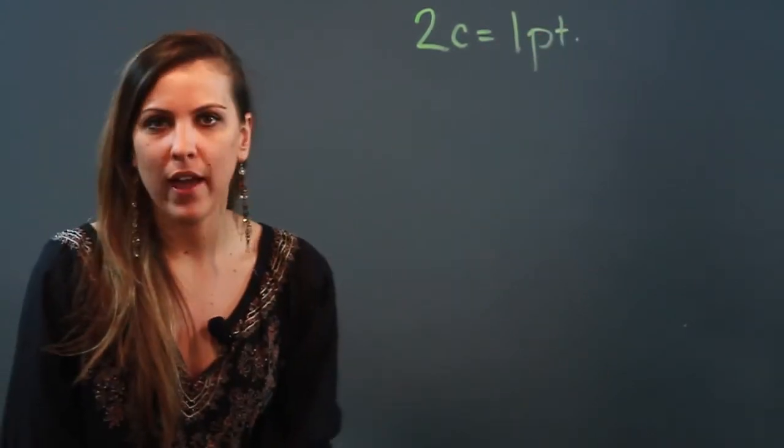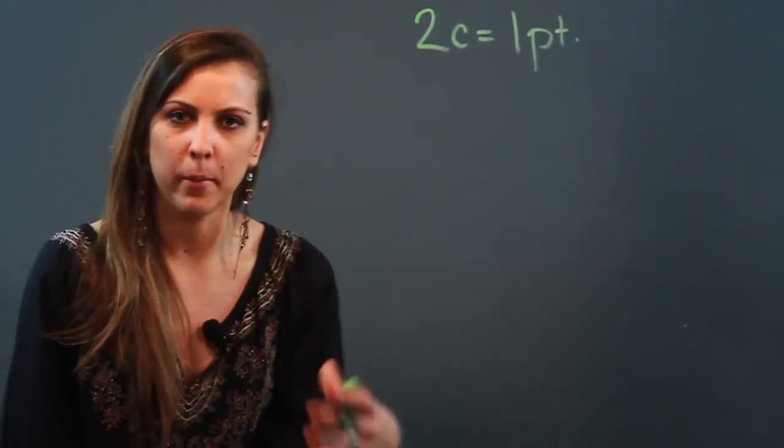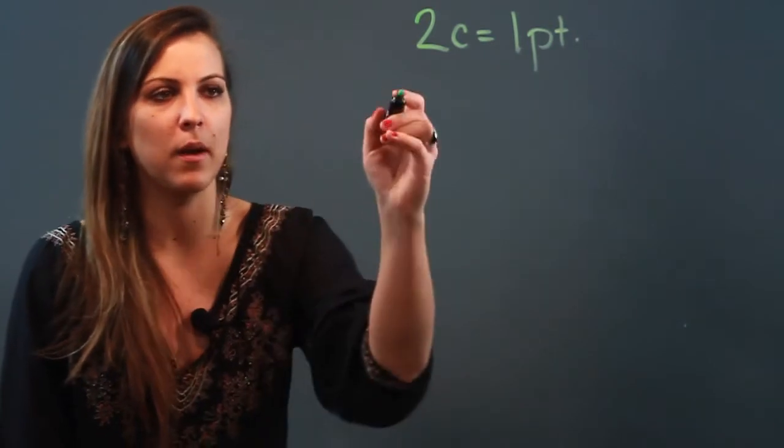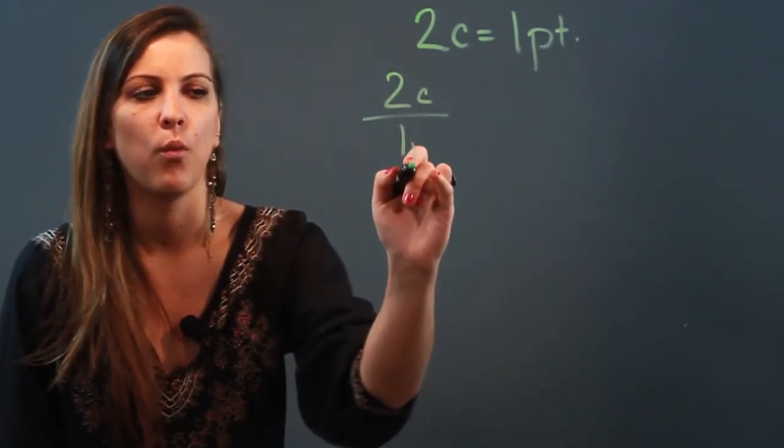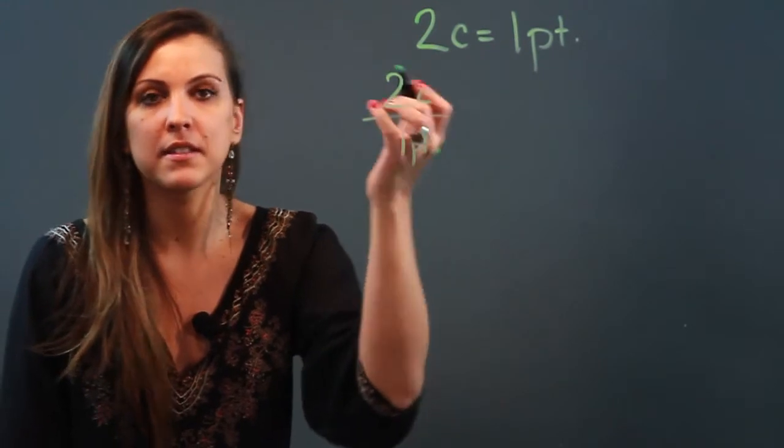Alright, so once you know that you can just set up a ratio, set up a proportion and find any other measurements. So I'm going to write this as two cups over one pint, and now if you have a set amount of pints